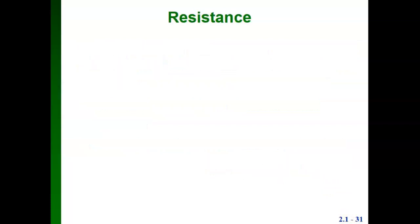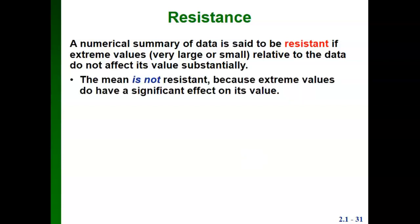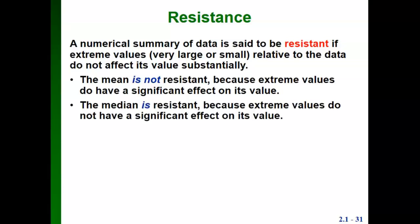Let's talk about what resistance actually means. A numerical summary of data is said to be resistant if extreme values do not affect its value substantially. The mean is not resistant because extreme values do have a significant effect. The median is resistant because extreme values do not have a significant effect on its value.